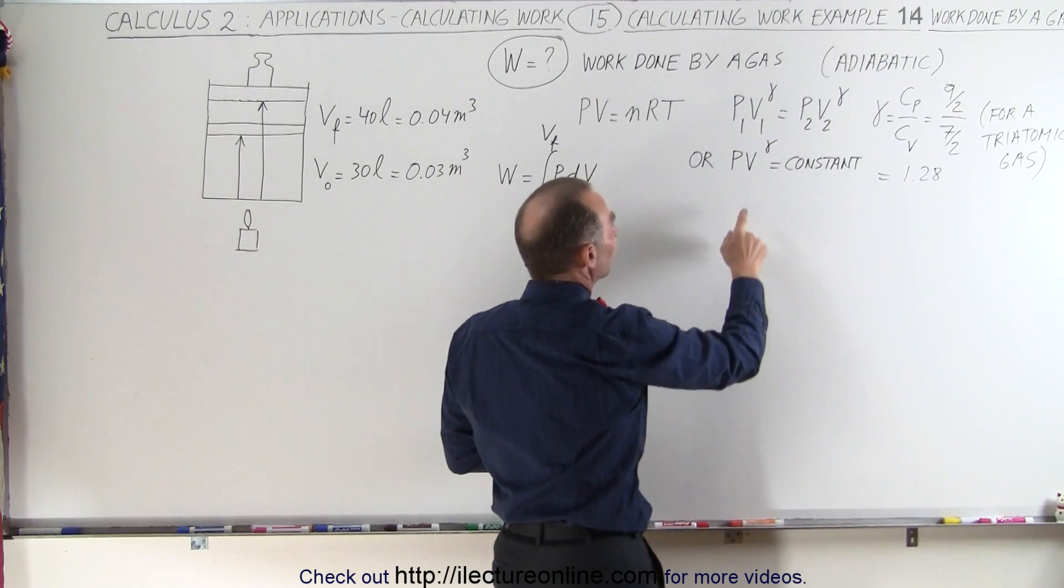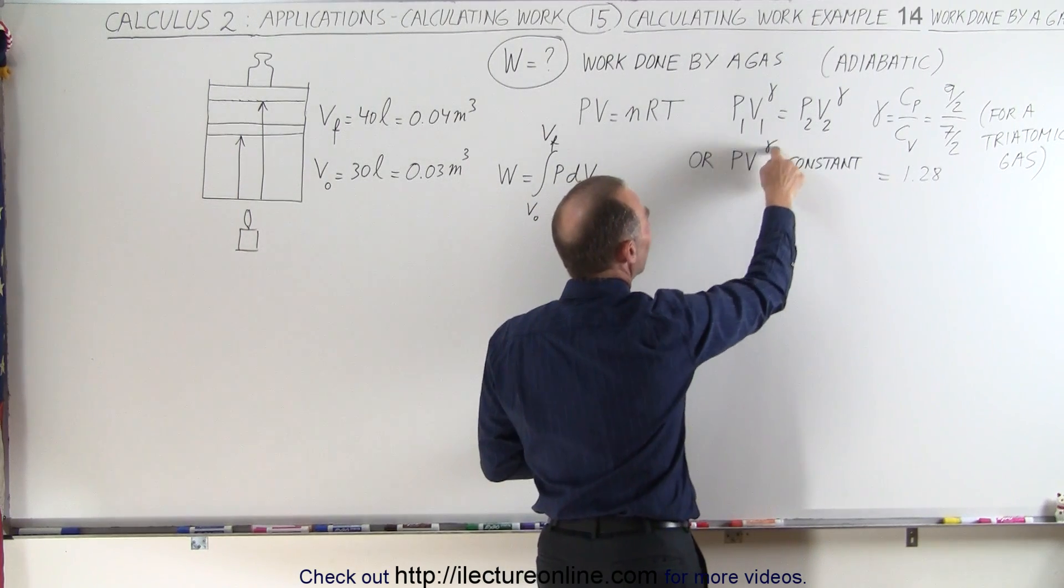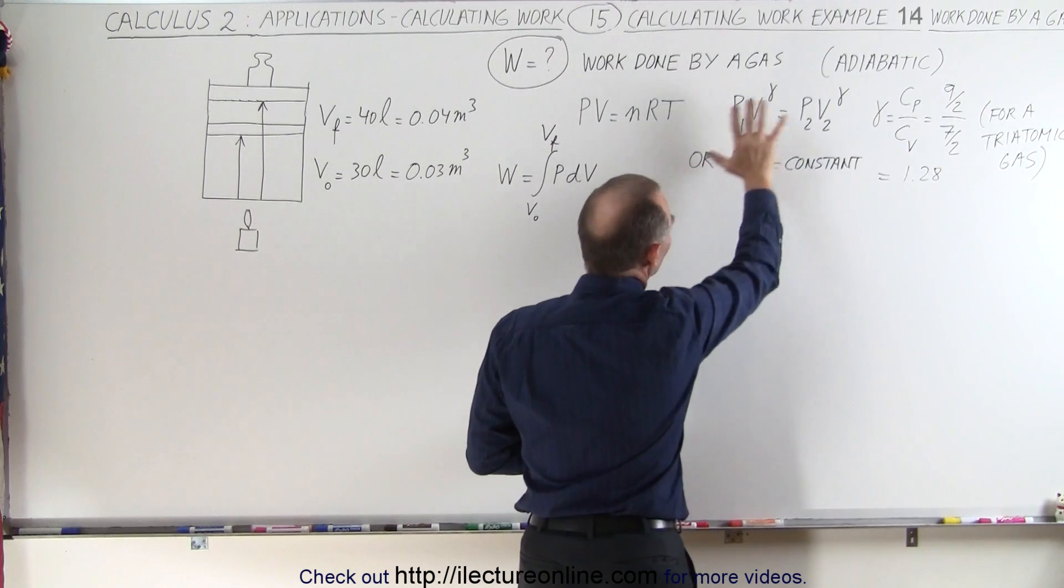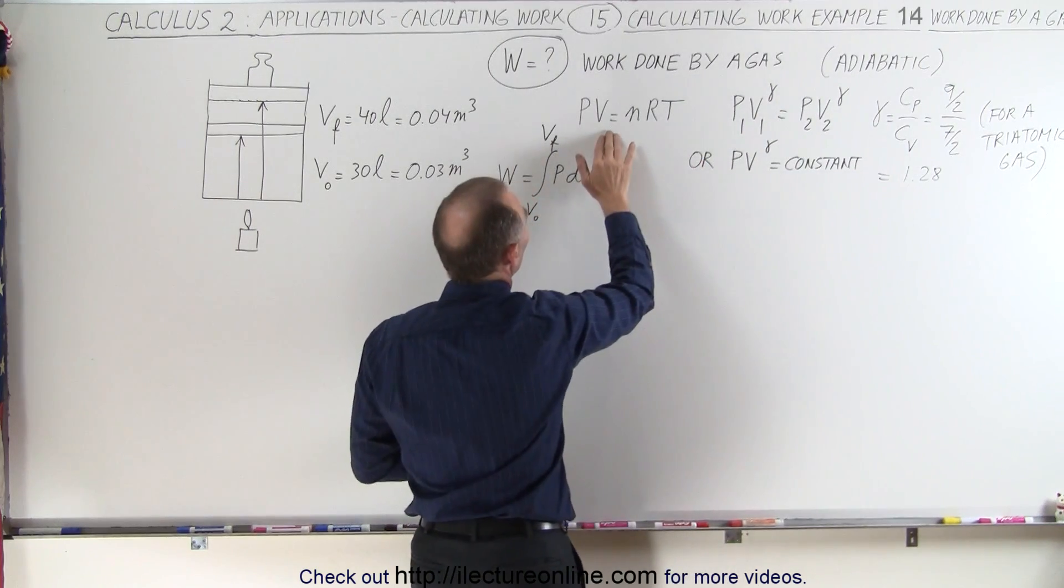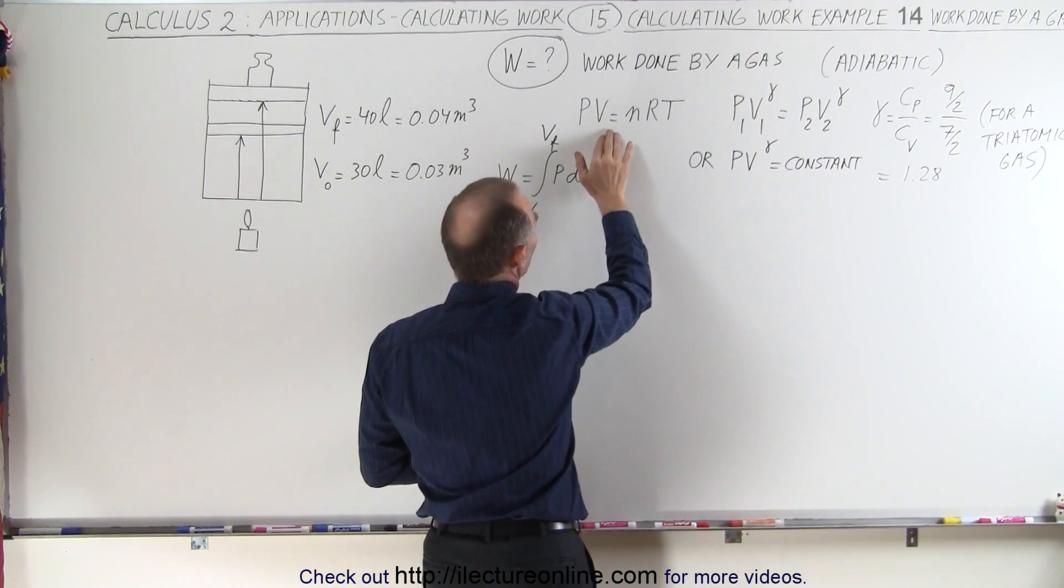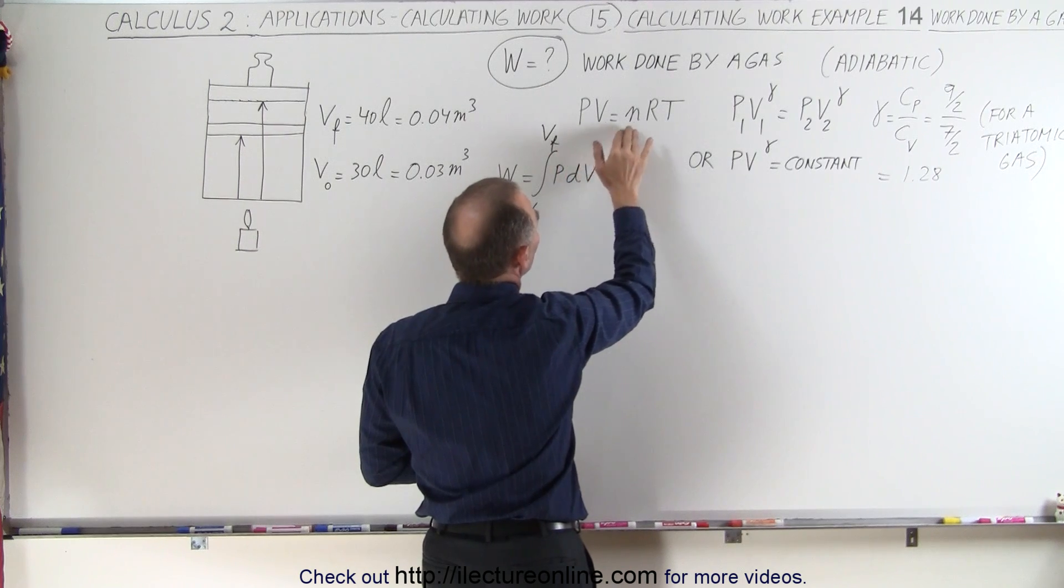We can also say that p times v to the gamma power is going to be a constant, and all this comes from the ideal gas equation where we have pv equals nRT.